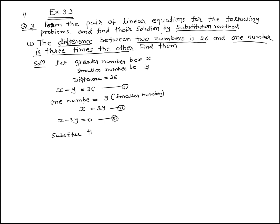Substitute the value of x equal to 3y into equation number one: x minus y equals twenty-six.